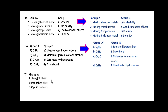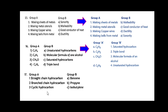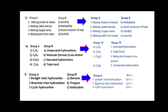Number 17: group A gives types of hydrocarbons — straight chain hydrocarbon, branched chain hydrocarbon, and cyclic hydrocarbon. In group B examples are given. The answers are: straight chain hydrocarbon — propyne; branched chain hydrocarbon — isobutylene; and cyclic hydrocarbon — benzene.